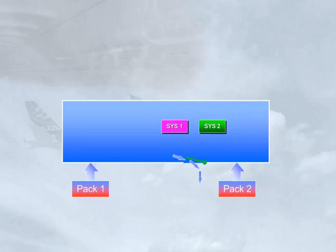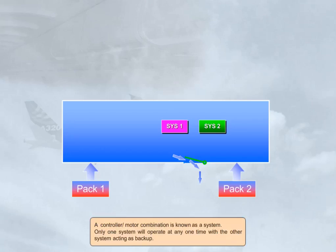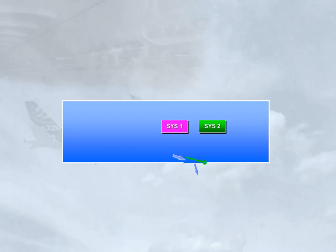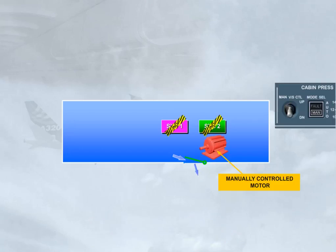A controller-motor combination is known as a system. Only one system will operate at any one time, with the other system acting as backup. A third motor is installed for use in the event of both automatic systems failing, and requires a manual input to open or close the outflow valve.